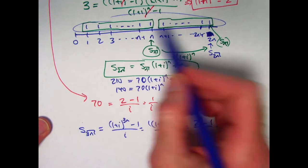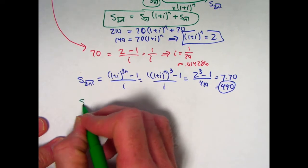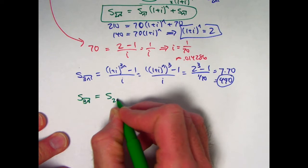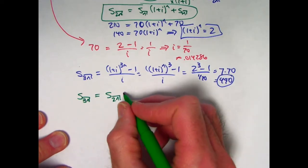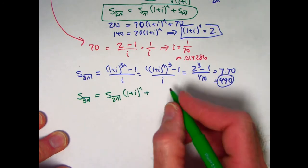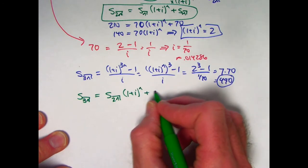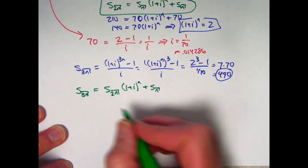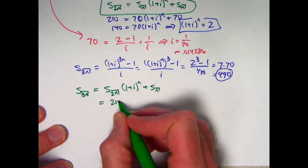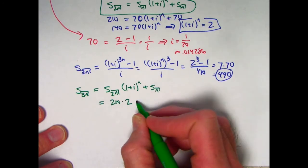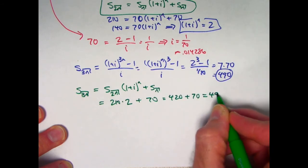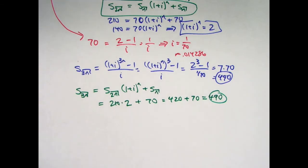Another way to find s_3n is to think in terms of a timeline. I can think of it as the first 2n payments, future value of that promoted in time by another n years, and then the future value at time 3n immediately after the very last payment of the last group of n payments. Once again use the quantities that we have or are given and found: this is 210 times 2 plus 70. 420 plus 70, we get the same answer, 490.